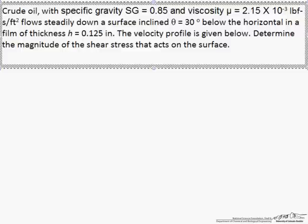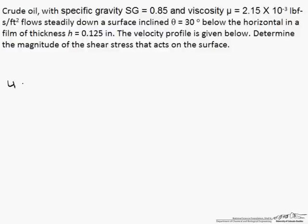The velocity profile is given below. Determine the magnitude of the shear stress that acts on the surface. So our velocity profile u equals rho g over mu times hy minus y squared over 2 times sine theta.